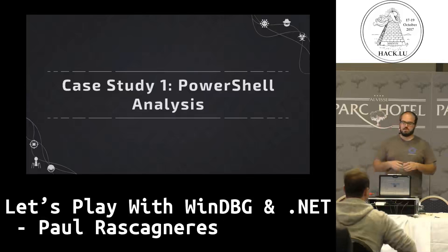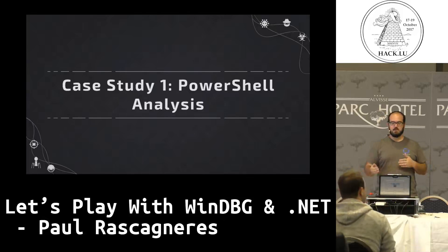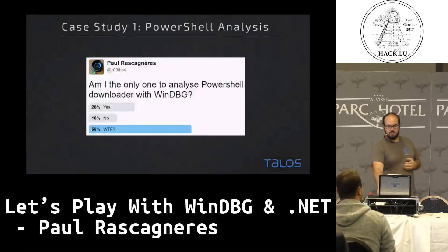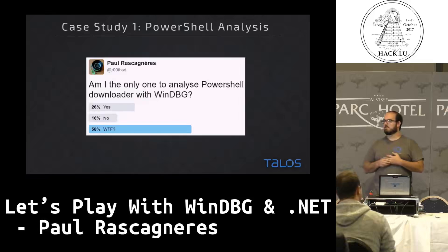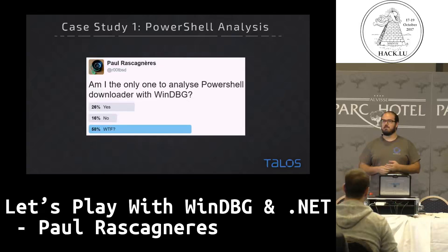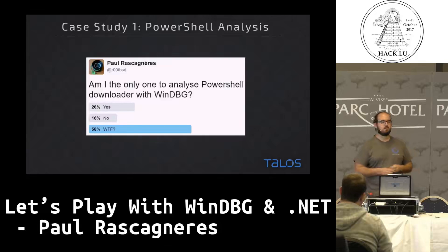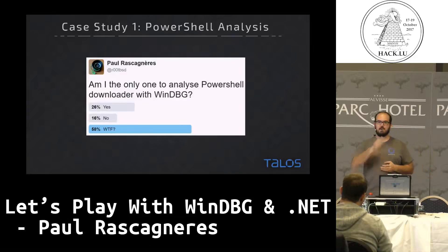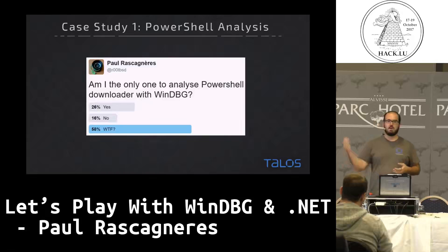I think the best thing is to show you some examples of how I use WinDBG for .NET applications. The first thing is PowerShell. Who in the room uses WinDBG to debug PowerShell scripts? Nobody. Normally, if you have to deal with PowerShell, you simply read the script and it's over. But imagine I give you 10,000 scripts with more or less the same behavior, but not exactly the same obfuscation or compression or encryption. I don't think you will open 10,000 Notepad tabs to read PowerShell. So in this case, I decided to make an automation using WinDBG — execute on a VM every script and get the information I want.